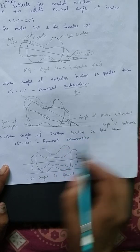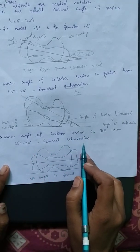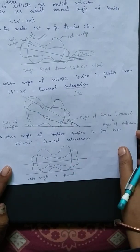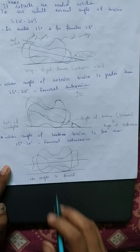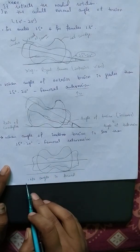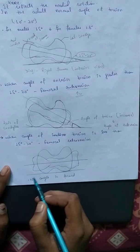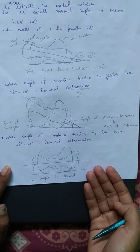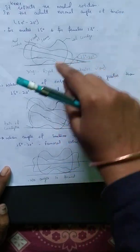When the angle of torsion is less than 15 to 20 degrees, this condition is known as femoral retroversion. In this diagram, no angle is formed because both axes are parallel to each other, so no angle is formed. This case can be femoral retroversion — when the angle is less than 15 to 20 degrees.